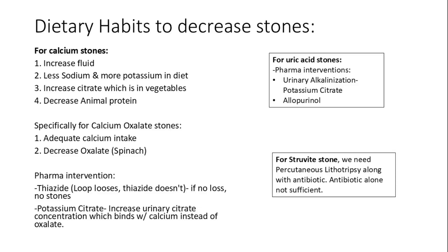For uric acid stones, alkalinization of urine with potassium citrate or using allopurinol are effective, while struvite stones may require surgical approaches along with antibiotics for acute treatment.